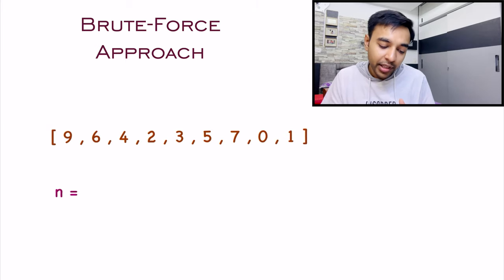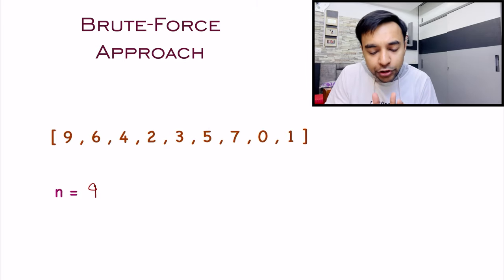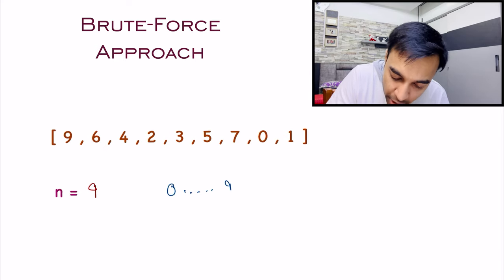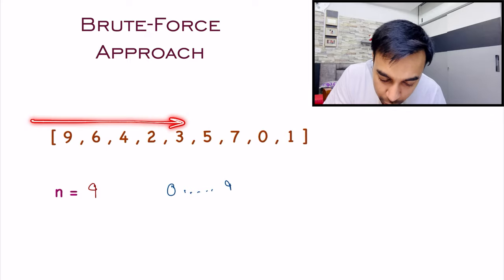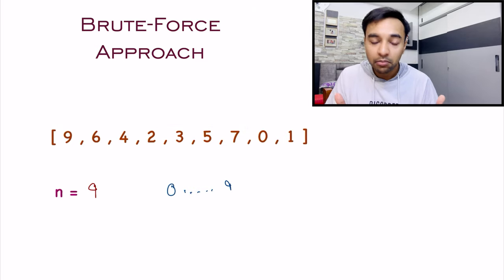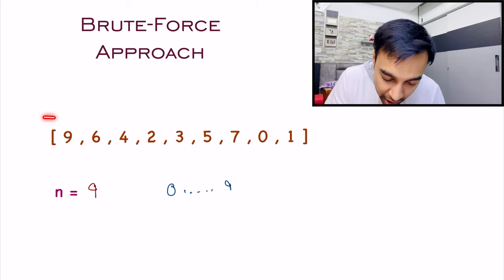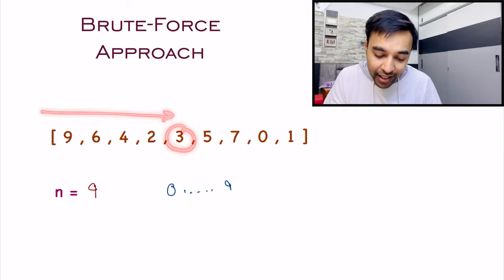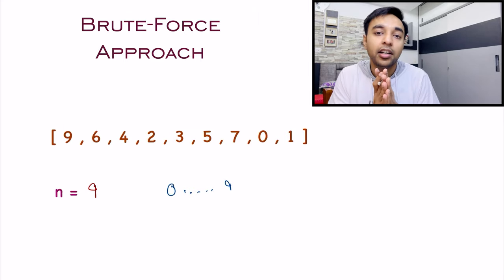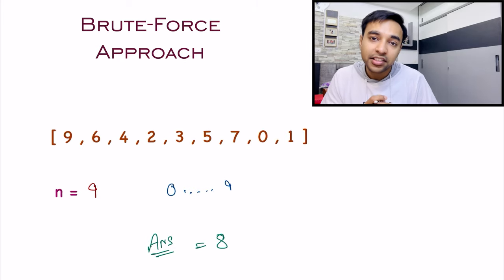Let's say I have this sample test case with 9 elements, so the value of n equals 9. The most obvious approach is to start from 0 and go all the way up to 9, iterating through the array again and again to check each element. You start with 0, traverse the array, and find a 0 — cool. Then look for 1, traverse again, and find a 1. Similarly for 2, then 3, and so on. Ultimately you will reach 8, traverse the entire array, and not find an 8. Hence, that is the missing number. This solution is correct and will give you the right answer every time.